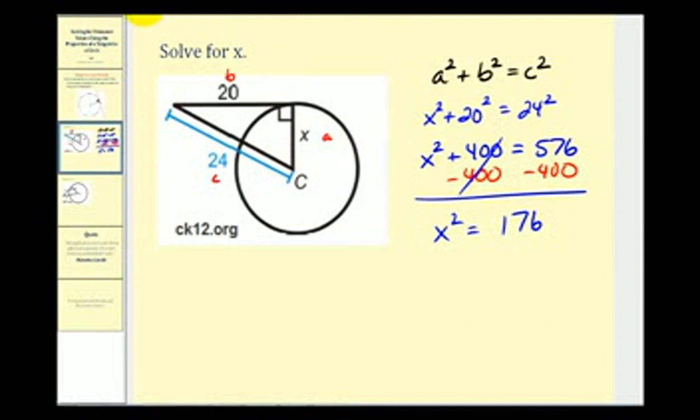Now we'll square root both sides of the equation. Since X is a length, we're only going to have the principal square root or the positive value. So we have X equals the square root of 176. Now we should try to simplify this. Let's go ahead and see if we can identify any perfect square factors of 176.